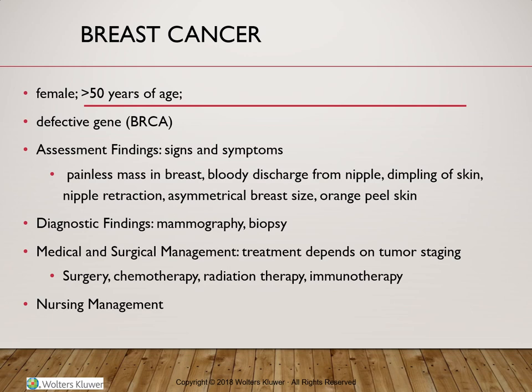Treatment is primarily surgical, with the type depending on the stage and type of breast tumor, as there are more than one type. Surgery is associated with chemotherapy and radiotherapy. A 'sandwich therapy' approach can be used for larger lesions — starting with chemotherapy to shrink the tumor, followed by surgery, then chemo and radiotherapy again. Immunotherapy can be added to improve outcomes.